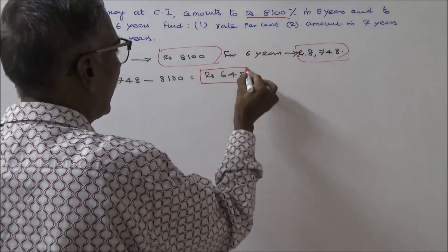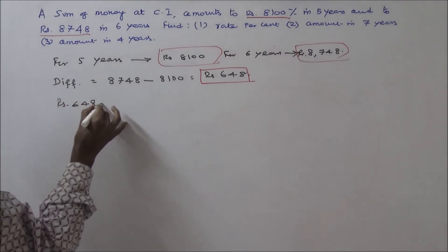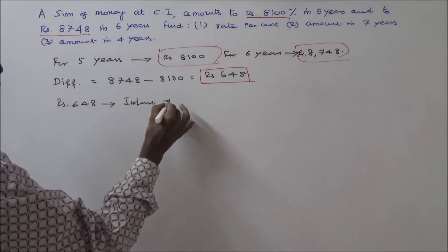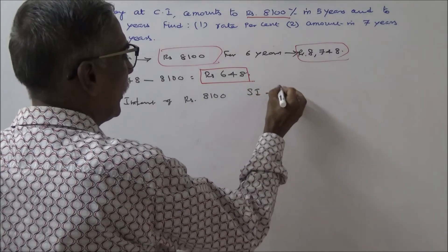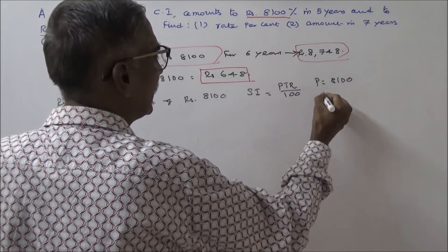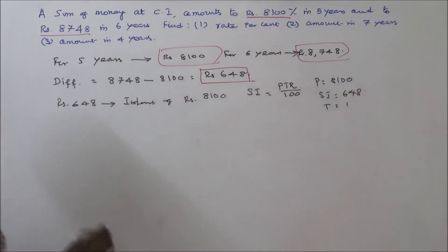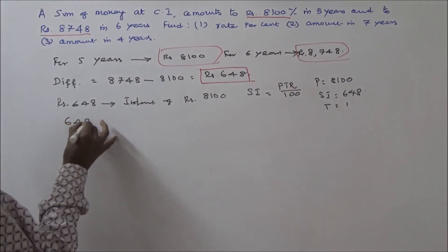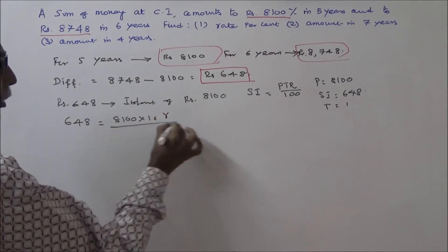This difference in amount, Rs.648, is the interest. Rs.648 is the interest on Rs.8100. Now we can calculate the rate of interest using the formula SI is equal to PTR divided by 100. Here P is equal to 8100, SI is equal to 648, and T is equal to 1.